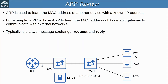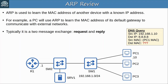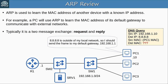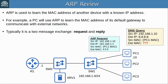For example, PC1 wants to send a DNS query to the DNS server at 8.8.8.8. It thinks 8.8.8.8 is outside of my local network, so I should send the frame to my default gateway 192.168.1.1. However, PC1 doesn't know the MAC address of 192.168.1.1, which is R1. So it will broadcast this ARP request message destined for R1's IP address. Every device in the LAN will receive the message because the destination MAC address is the broadcast MAC address of all Fs.